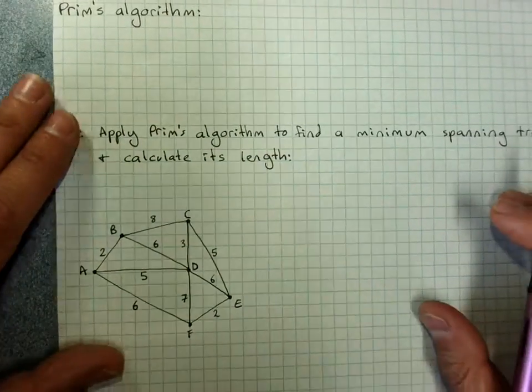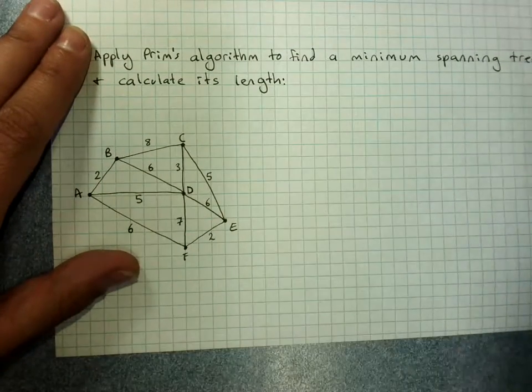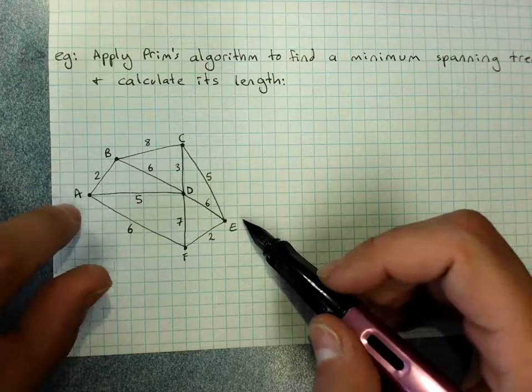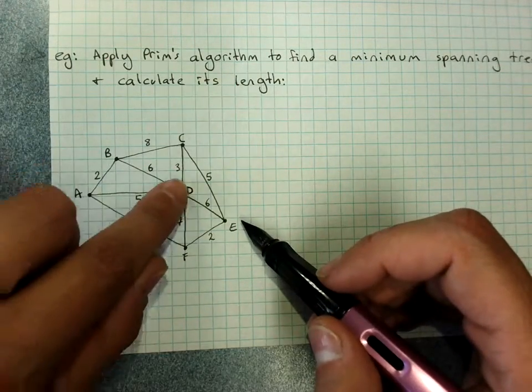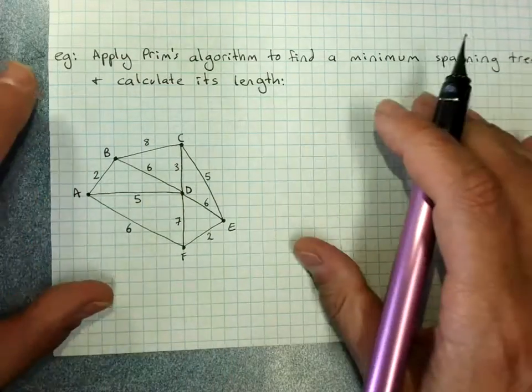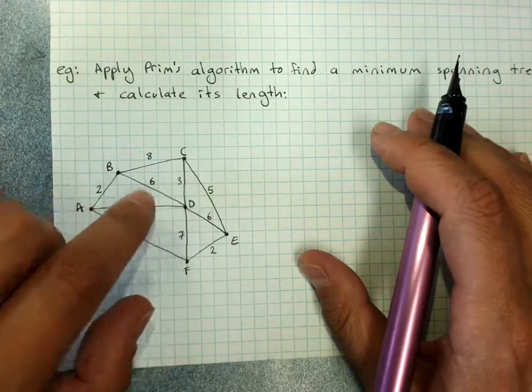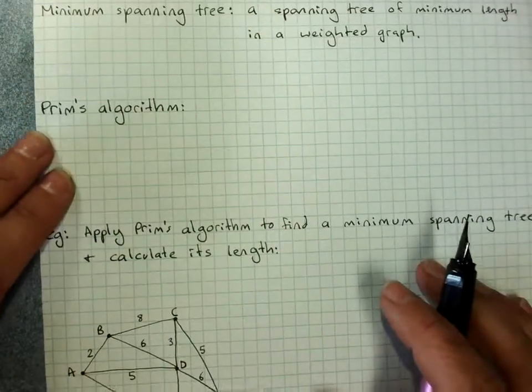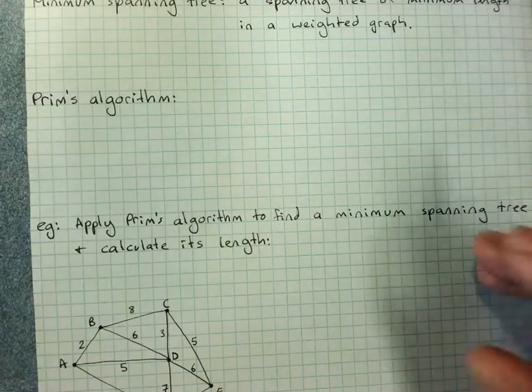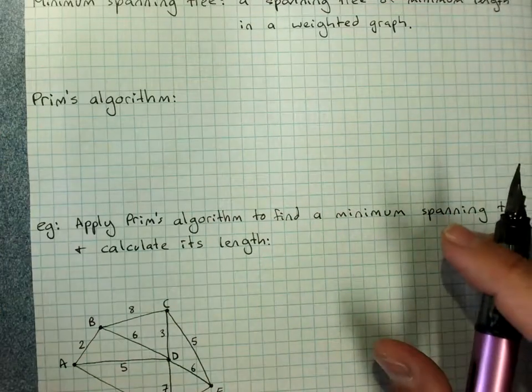So here's a weighted graph and a minimum spanning tree would be the tree that connected all these vertices using the minimum distance. So it wouldn't involve every single edge in the graph. Now to find the minimum spanning tree, we use Prim's algorithm and it's nice and easy.